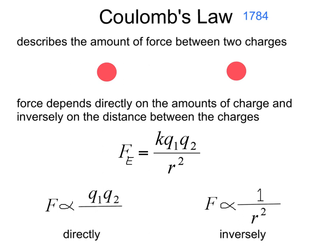Charles Augusta Coulomb published his Coulomb's Law in 1784 in his memoirs. This describes the amount of force between two charges. Let's call this charge Q1 and this charge Q2. You notice that the force depends directly on the amounts of charge and inversely on the distance between the charges. He called that distance R.